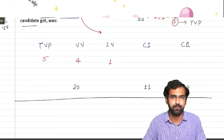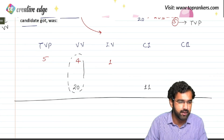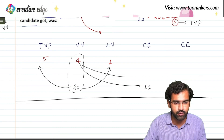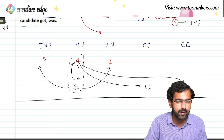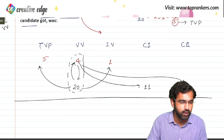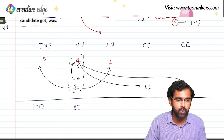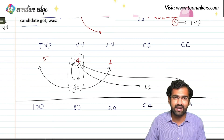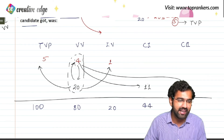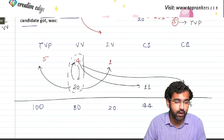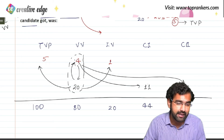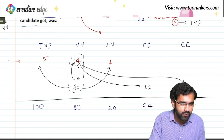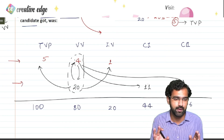Now I'll scale this data. Since valid votes appear as 4 in one ratio and 20 in another, I multiply the first scale by 20 and the second by 4. So 20 × 5 = 100 total votes, 20 × 4 = 80 valid votes, 20 × 1 = 20 invalid votes. Then 4 × 11 = 44 votes for candidate one, and 4 × 9 = 36 votes for candidate two. So out of 100 total votes, 80 are valid; of those, candidate one got 44 and candidate two got 36.